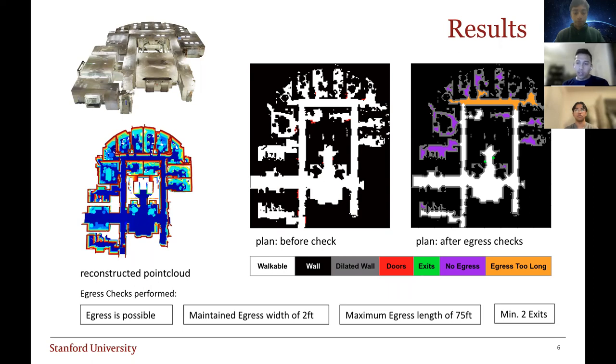Four egress requirements were checked against the plan that was extracted from the 3D point cloud. First, whether or not all points on the map can generate a valid egress to an exit. Second, whether or not those egress paths have a continuous width of two feet. Third, whether or not those paths exceed 75 feet in length. And finally, minimum number of exits on the floor plan. These requirements were simplified versions of the requirements from the California Building Code to prove and illustrate the concept of this project.